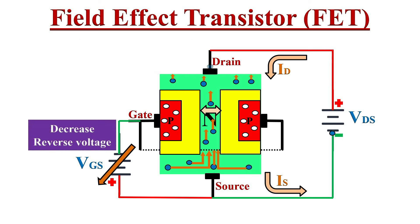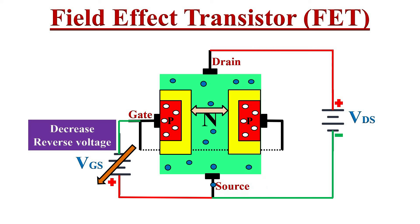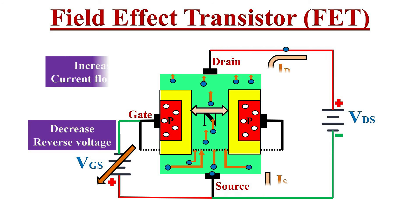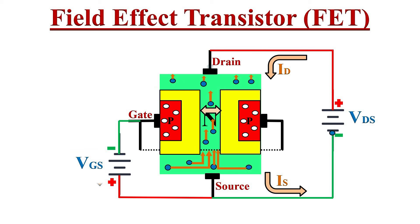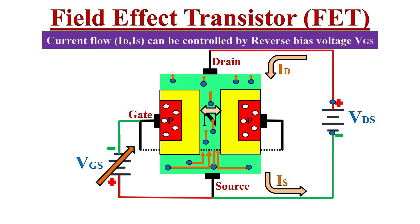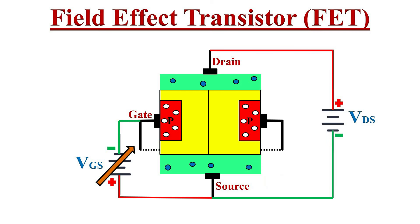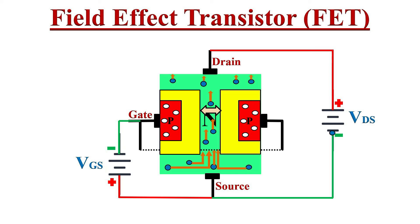If we decrease the reverse voltage VGS, the channel width will increase, hence there will be more space for electrons to flow, meaning the current flow between drain to source increases. So by increasing and decreasing the reverse voltage VGS at the gate terminal, we can control the flow of current between drain to source terminal and we can also switch off this channel.